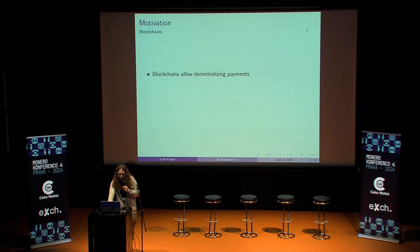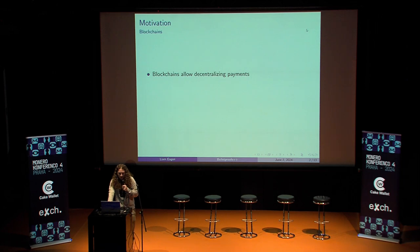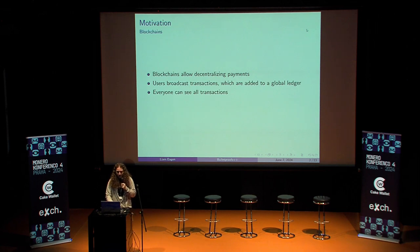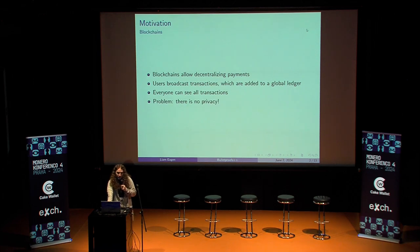So confidential transactions. Motivating: we're all kind of here, so probably already know this. But blockchains, decentralizing payments — we broadcast transactions which are added to a global ledger. Everyone can see all of the transactions, and this is fundamental to the simplest blockchain constructions, like Bitcoin. And there's a problem: there's no privacy. Everybody has to see all the transactions to check that they're valid and to add them to this global ledger.